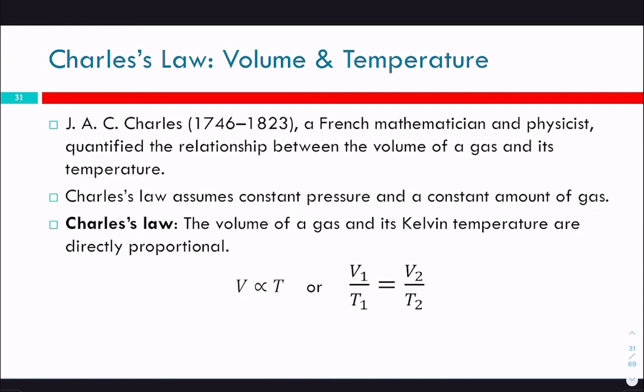Charles' Law: the volume of a gas and its Kelvin temperature are directly proportional. If pressure and volume are inversely proportional—one goes up, the other goes down—a directly proportional relationship means when one goes up, the other also goes up. So if we heat something up, it's going to get bigger; if we cool it down, it gets smaller.